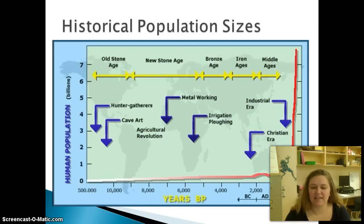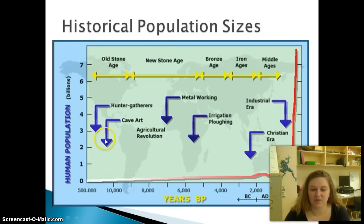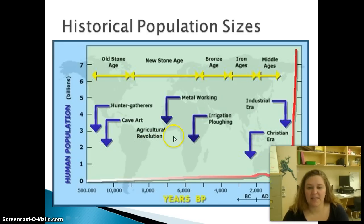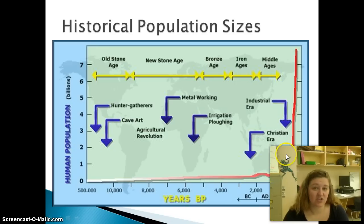You can see that the human population has grown as our planet has gone through some different ages. In the old Stone Age, we had hunters and gatherers and we started to see some cave art. Then we had the Agricultural Revolution, where man started using seeds, planting seeds, gathering those seeds, and started having livestock. Then we started seeing irrigation and the Industrial Era. As we've made technological advances, our population has increased in size.